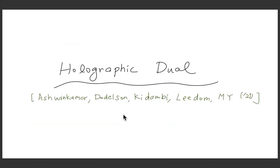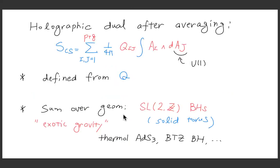Now there was the question of what the holographic dual is — it's a very exotic theory. There is not a complete understanding yet, but at least a tentative understanding is that it's simply a Chern-Simons theory: a copy of U(1). For signature (P,Q), you have P plus Q copies of U(1) Abelian Chern-Simons theory with the level given by the quadratic form Q.